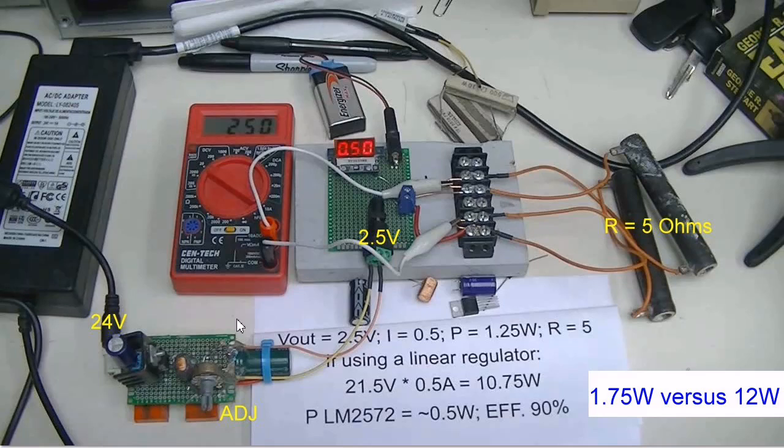Let's look at the efficiency here. 2.5 volts, half an amp. That's 1.25 watts. I estimated half a watt for the power supply. So I had 1.75 watts used by the power supply and the load.